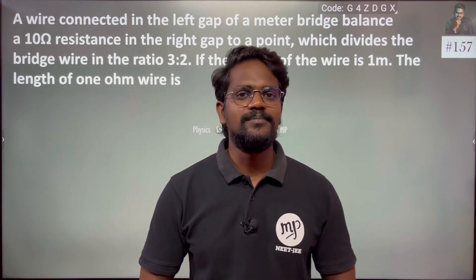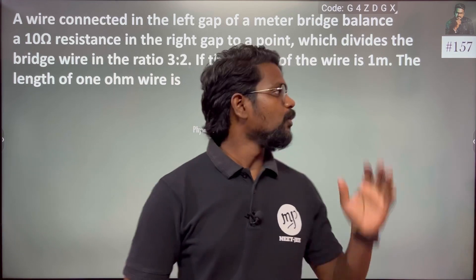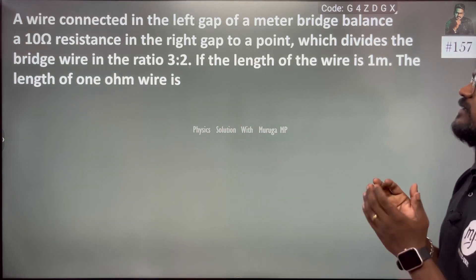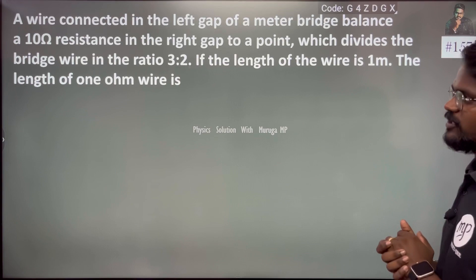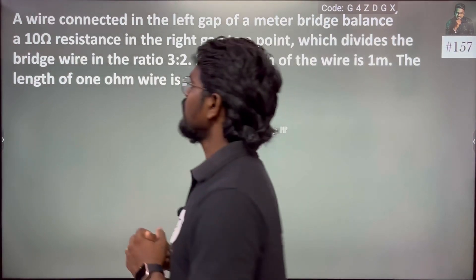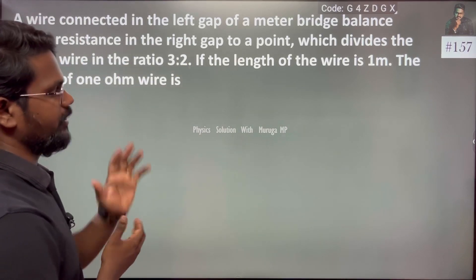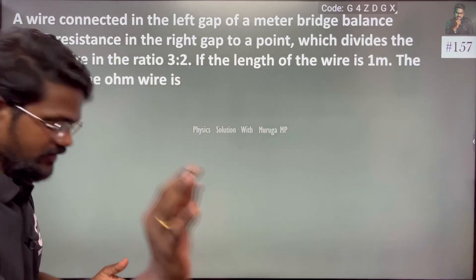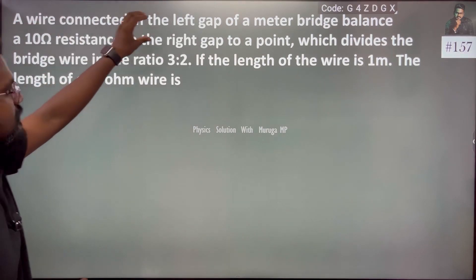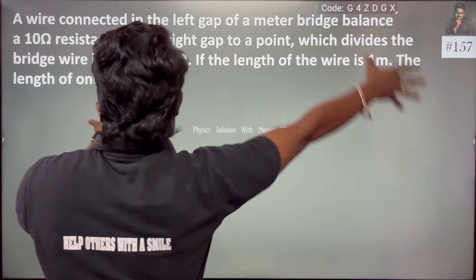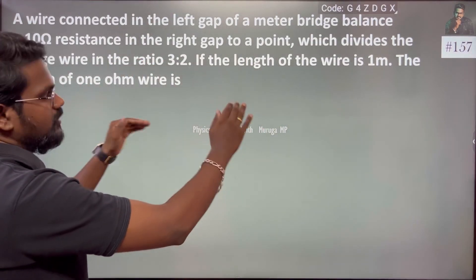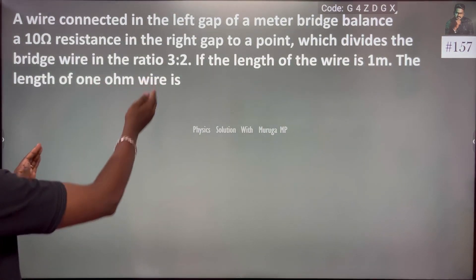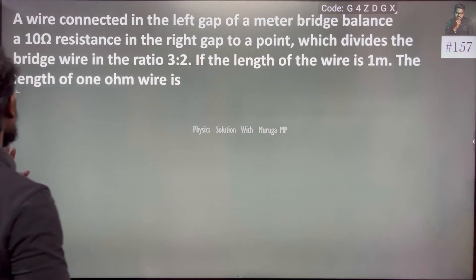Hi everyone. Given an interesting question: a wire connected in the left gap of a meter bridge, balanced with a 10 ohm resistance in the right gap, to a point which divides the bridge wire in the ratio 3 is to 2. The bridge wire is 1 meter and divides in the ratio 3 is to 2.